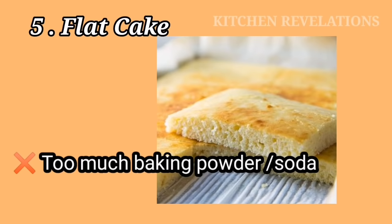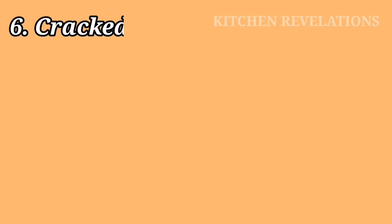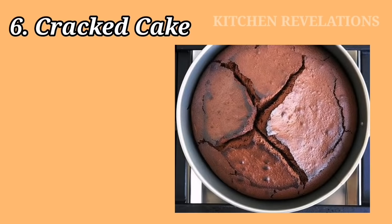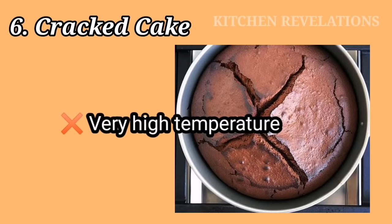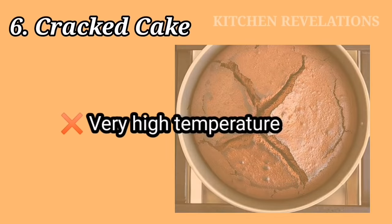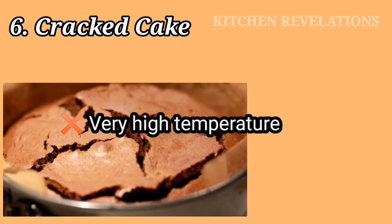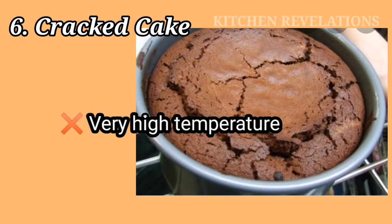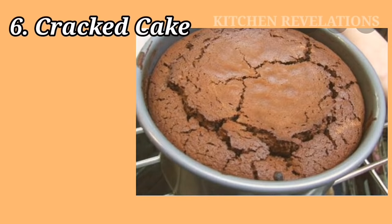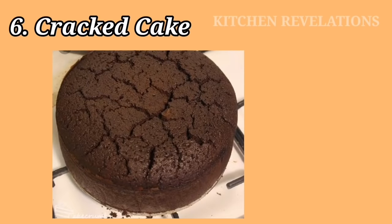The second reason for a flat cake is the usage of baking powder and soda — using too much or expired ones will result in a flat cake. The next problem is a cracked cake. This happens when your temperature setting is really high. If the oven is too hot, the outer portion cooks much faster than the inside; the top cooks quickly while the inside continues to cook, resulting in a cracked crust. Always check temperature settings before baking.